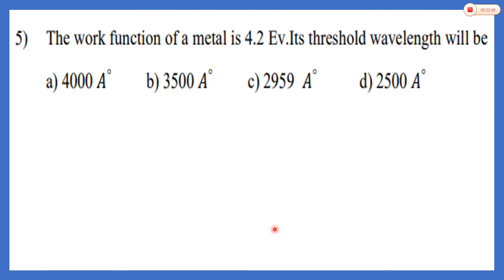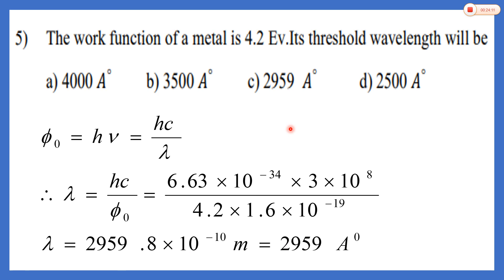Fifth MCQ: the work function of a metal is given as 4.2 eV — find the threshold wavelength. Using phi-zero equals h-c upon lambda-zero, so lambda equals h-c upon phi-zero. Converting 4.2 eV to joules by multiplying by 1.6 × 10⁻¹⁹, with h equal to 6.63 × 10⁻³⁴ and c equal to 3 × 10⁸, dividing gives the answer approximately 2959 × 10⁻¹⁰ meters (in Angstroms). Answer C is correct.